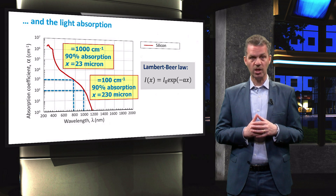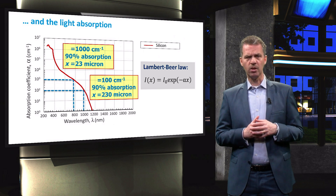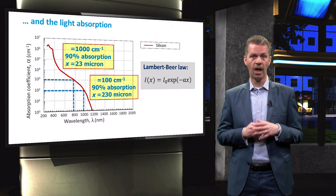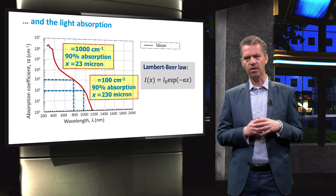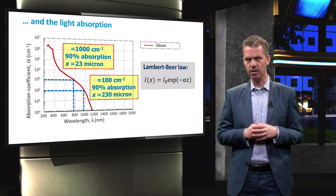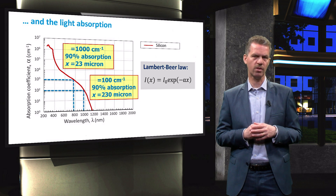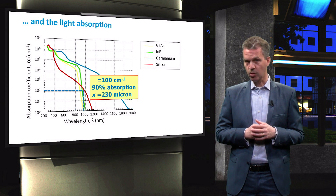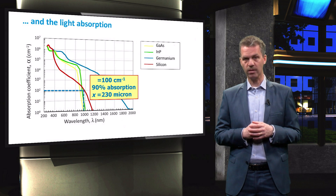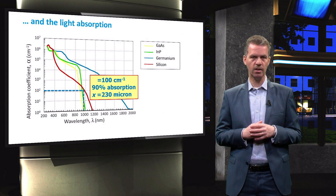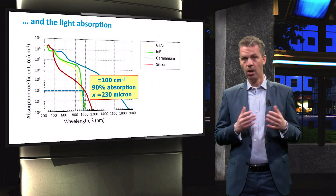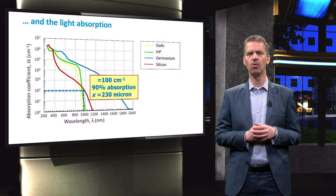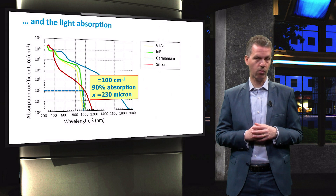If we look at a wavelength of just below 1000 nanometers, the absorption coefficient is an order of magnitude lower at about 100 inverse centimeters. In this case, we need a thickness of 230 micrometers to absorb 90% of the incident photons up to a wavelength of 1000 nanometers. When we compare the wavelength-dependent absorption coefficient of crystalline silicon to direct bandgap materials such as gallium arsenide, indium phosphide and germanium, we can clearly see that the absorption coefficient of silicon is up to 2 orders of magnitude smaller, up to the direct bandgap of 3.4 eV.